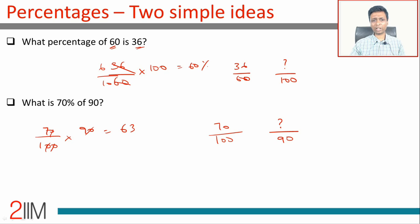This entire topic is based on two simple ideas. What percentage of B is A? Nothing but A by B into 100. What is P percent of Q? Nothing but P by 100 into Q. P percent is P per 100. Any fraction, anything represented as a percentage of any other number—A as a percentage of B is A by B into 100. P percentage of Q is P by 100 into Q. This entire topic is going to just rest on these two simple ideas.